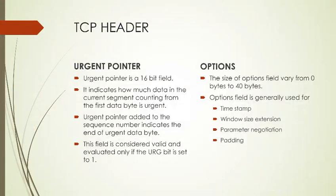Urgent pointer is a 16-bit field which indicates how much data in the current segment is urgent. The urgent pointer added to the sequence number indicates the end of the urgent data byte. This field is evaluated only if the urgent flag is set to 1; otherwise it is ignored. The options field accounts for the remaining 40 bytes of the header and is used for timestamp, window size extension, parameter negotiation, and padding.